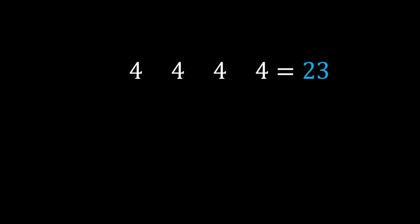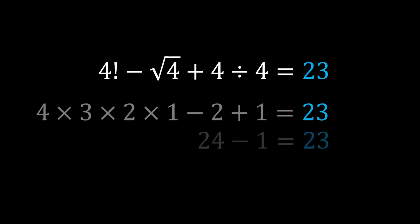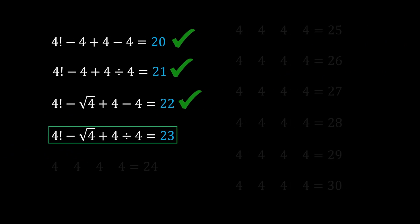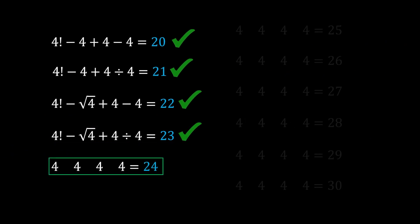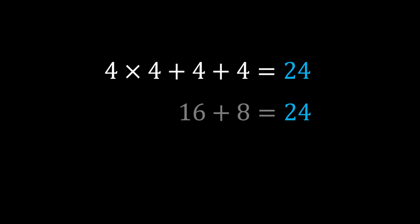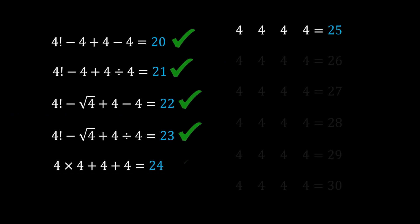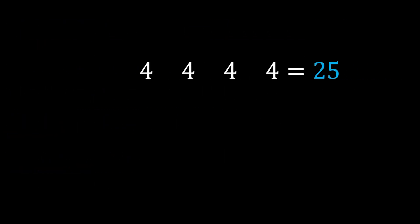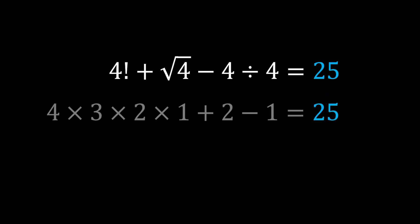Number 23: 4! − √4 + 4 ÷ 4 = 24 − 1 = 23. Number 24: 4 × 4 + 4 + 4 = 16 + 8 = 24 — I think this is the easiest combination. Number 25: 4! + √4 − 4 ÷ 4 = 24 + 1 = 25.